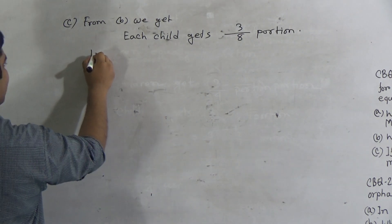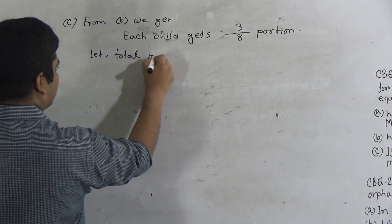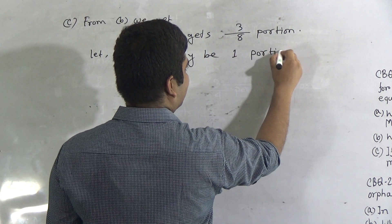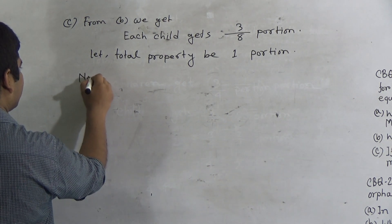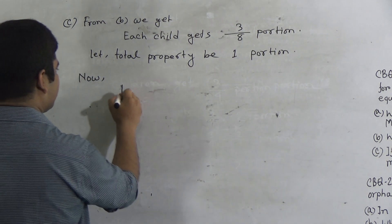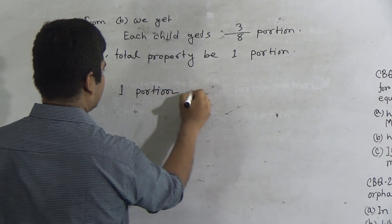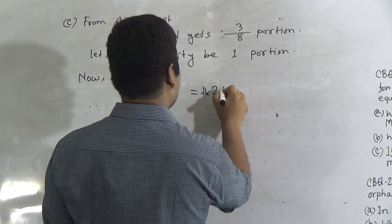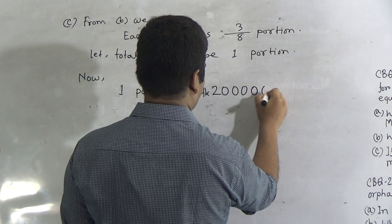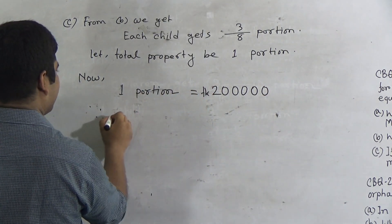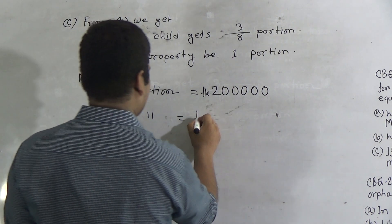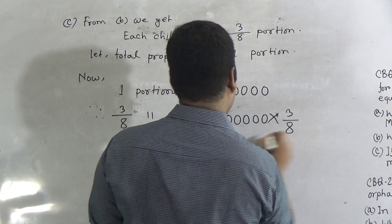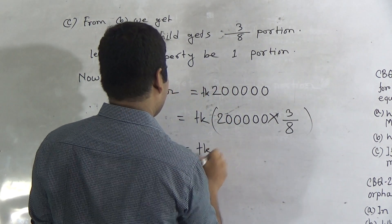Again, we let total property be one portion. One portion equals two lakh taka. Therefore, three by eight portion equals two lakh multiplied by three by eight.